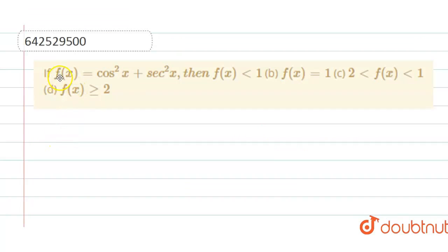In this question, we are given f(x) equals cos²x plus sec²x, and then we have to check whether f(x) is less than 1, f(x) equals 1, f(x) lies between 1 and 2, or f(x) is greater than or equal to 2.